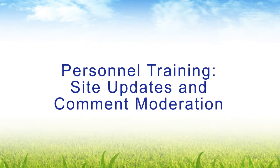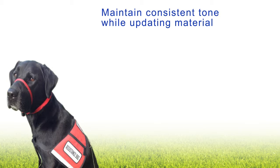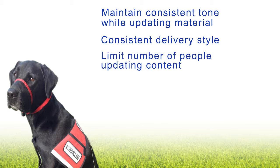Personnel training, site updates, and comment moderation. Consistent tone. Just like Libel over here is sitting very nicely, we have to have a consistent tone when updating and presenting material on our website. The delivery style has to match what's in our physical center. We achieve this by choosing one person who has good writing skills, is friendly, and embodies the mission of your organization. If you're using different fonts and font sizes, you're not consistent, and it becomes confusing for people. You need content that is on the same thinking process every time so people recognize it and become at ease finding things.